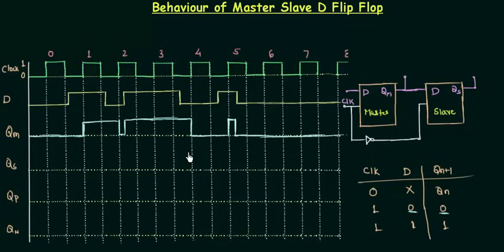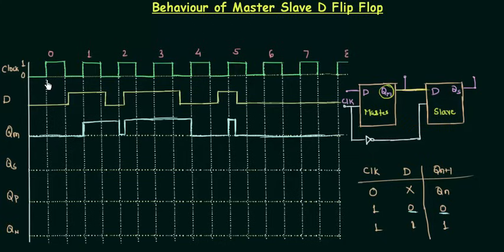This is QM. Now we will move to QS, the output of the slave flip-flop. Remember, for QS the clock is inverted — we have to consider only the time intervals when the clock pulse is low. Also, the input to the slave flip-flop is not D but QM. So we check QM during the low clock periods. Initially QS will be low because QM is low, and it remains low till the next low clock pulse.